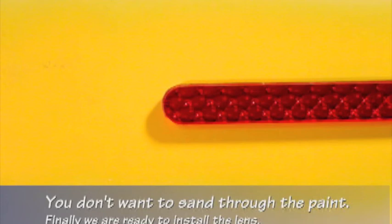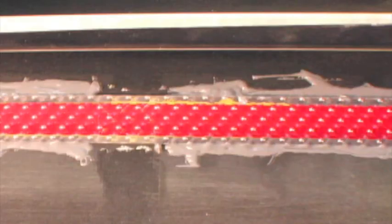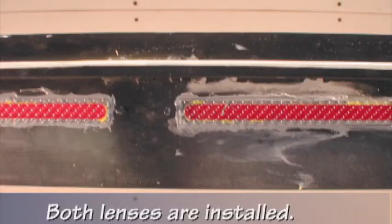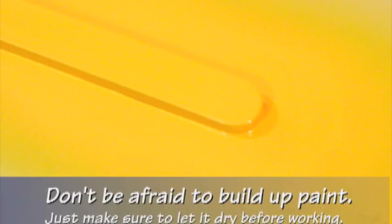Finally, we are ready to install the lens. A quality two-part epoxy is used. Both lenses are installed. Next, we apply still more paint to fill. Don't be afraid to build up paint. Just make sure to let it dry before working.